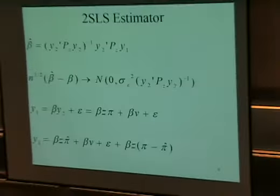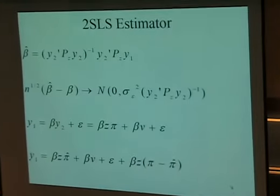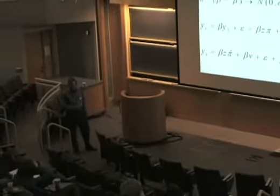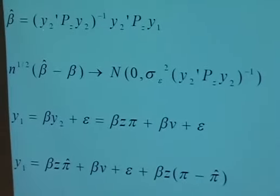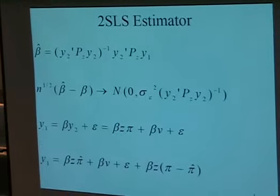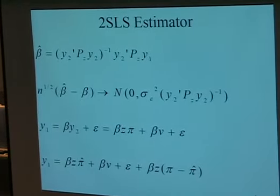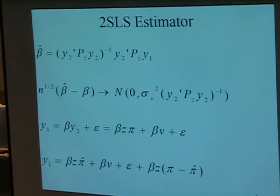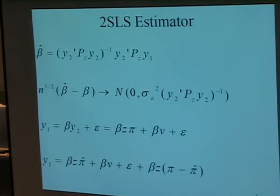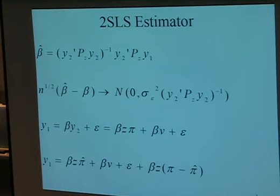In the 1950s, econometrics really got going with computers, and for 40 years I would say 98% of every paper in a journal used an estimator called two-stage least squares. We estimate the coefficient of Y2 by projecting Y2 on the subspace spanned by the Z's. First-order asymptotic theory, which follows from a central limit theorem, says that we have root-n convergence—that is, the square root of n times beta-hat minus the true beta converges in distribution to a normal with variance sigma-squared. Everybody did this, it worked fine, and there were all sorts of Monte Carlo experiments confirming it.